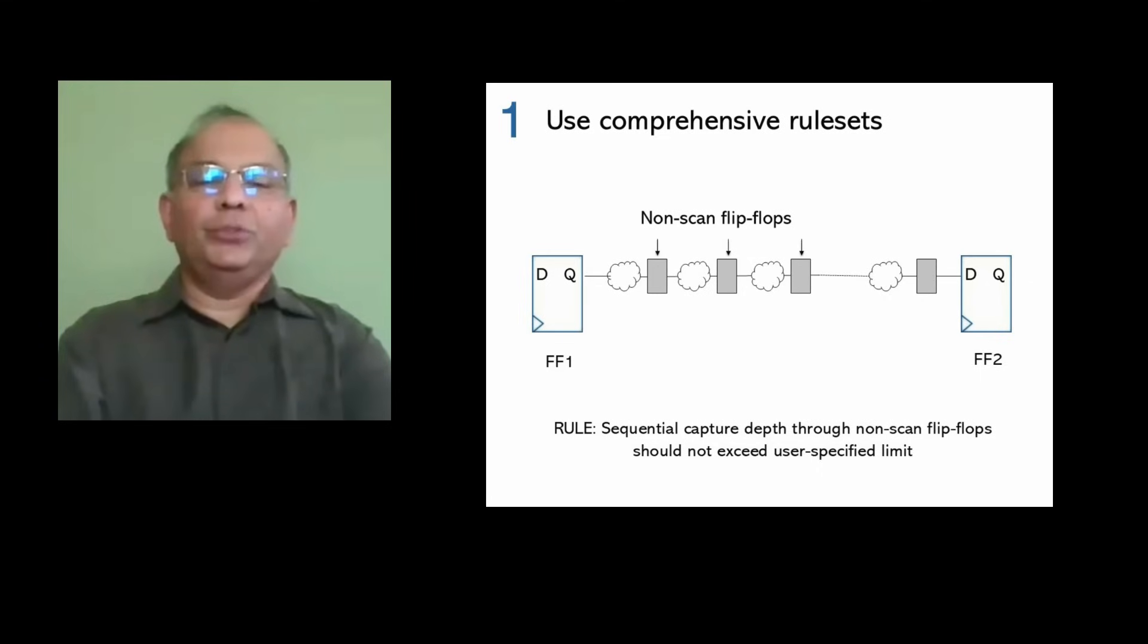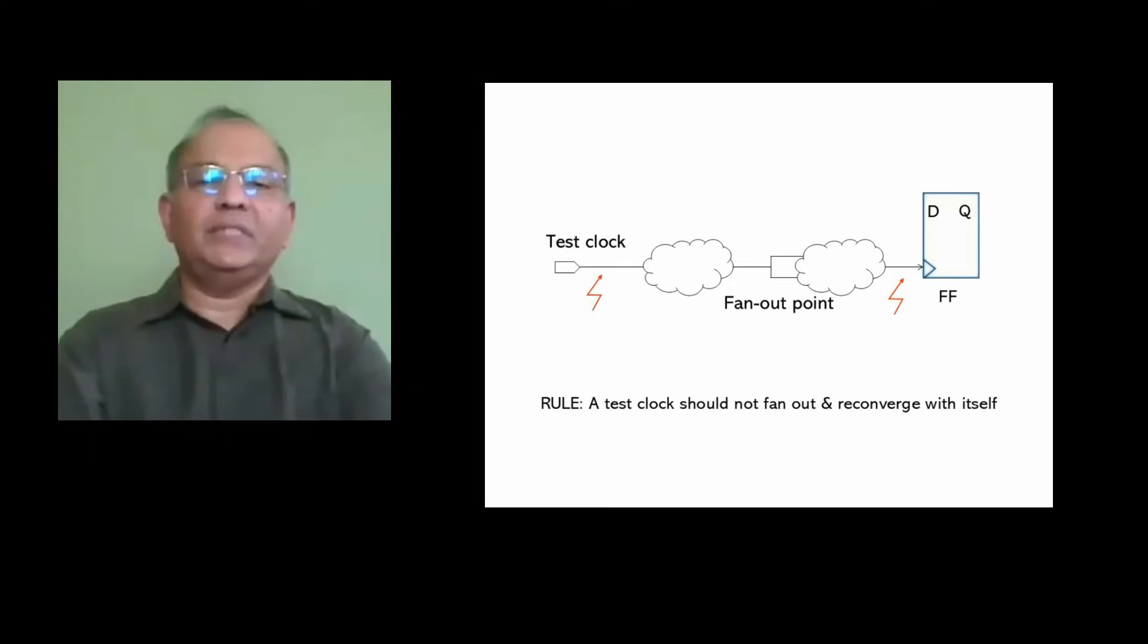Number one, you need comprehensive rules for async resets, clocks, and data connectivity across all design stages. Two examples are rules for sequential depth and for test block reconvergence glitch.